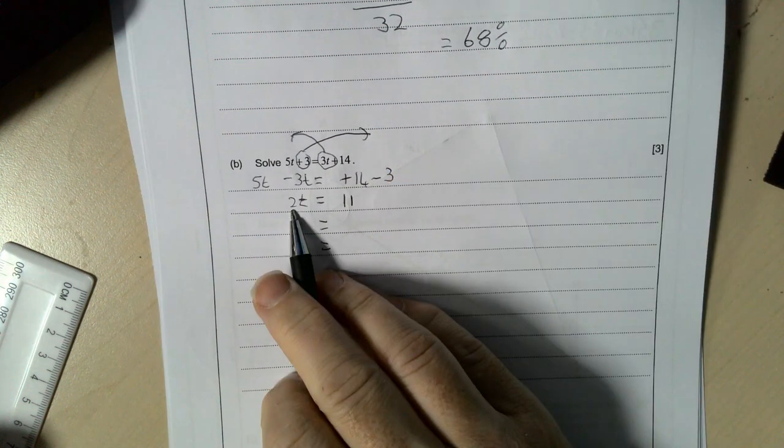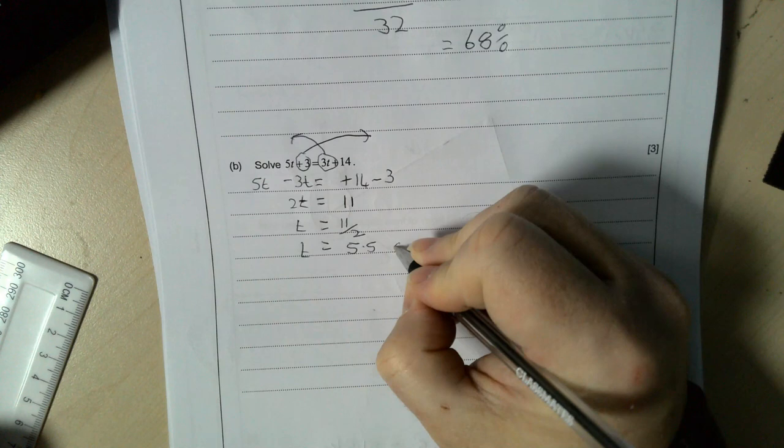Half of 11 is 5.5, so t = 5.5 or 5 and a half.